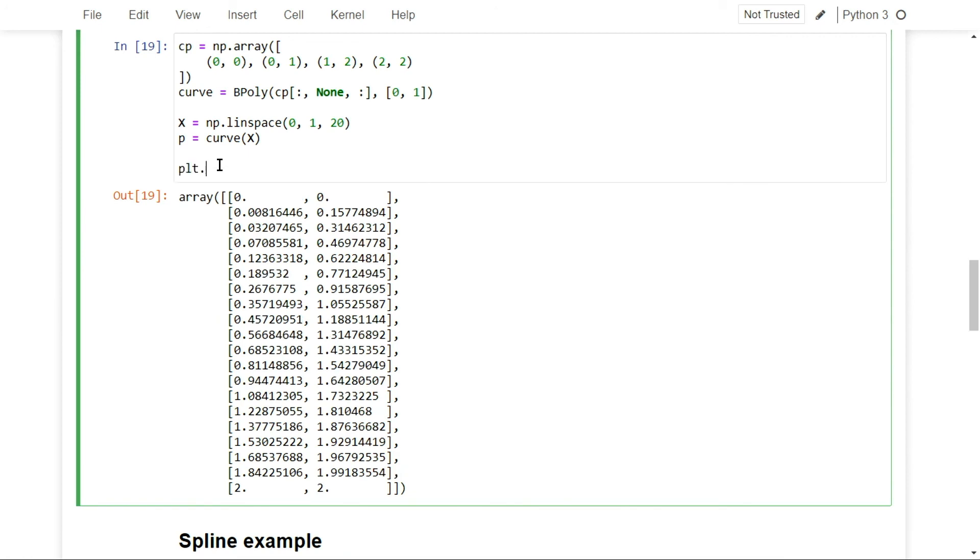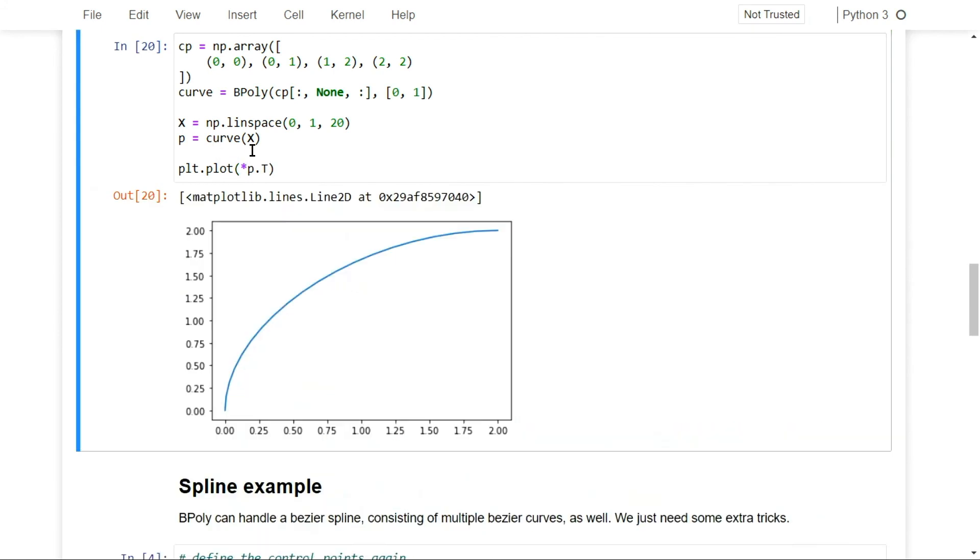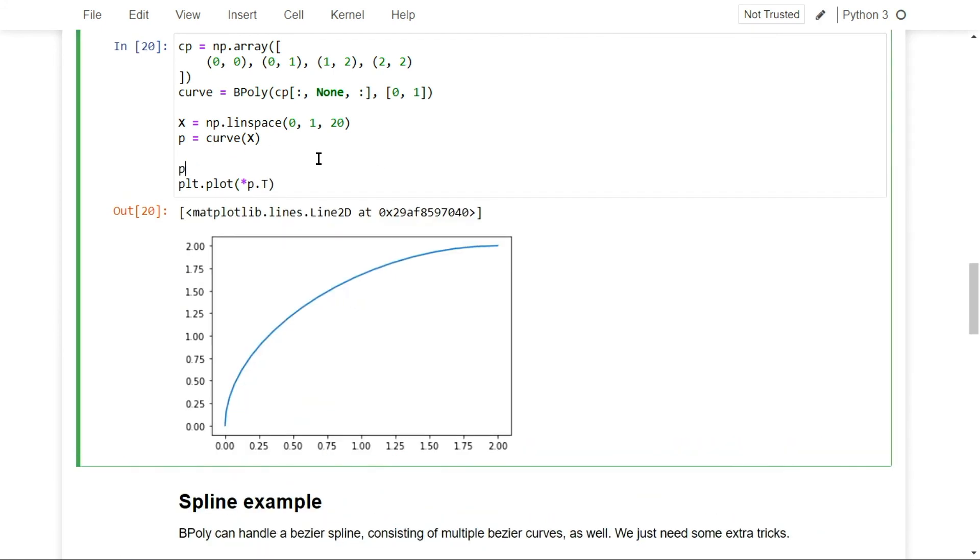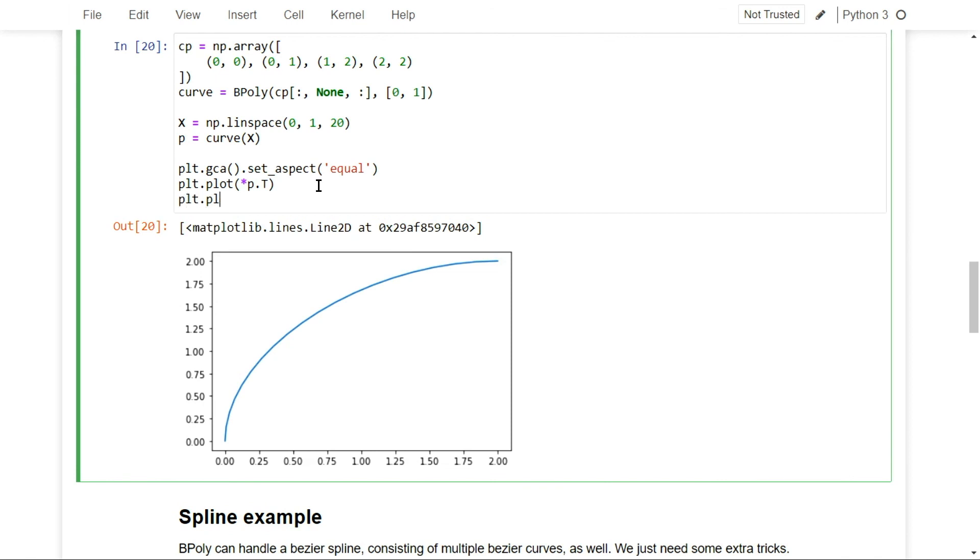And then when we have that, we can just plot it out. Great, just like that. And if you also plot the control points, you will see that it would make sense. It would look just like a pen tool in Photoshop.